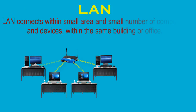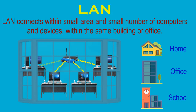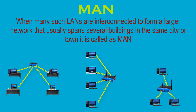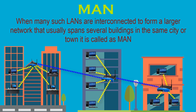LAN usually connects within a small area and a small number of computers and devices, typically within the same building or office. Examples of LAN are setups in a home, small office or school. When many such LANs are interconnected to form a larger network that spans several buildings in the same city or town, it is called a MAN. For example, connections of various bank ATMs in a city, or all computers connected in a university, or a reservation system.